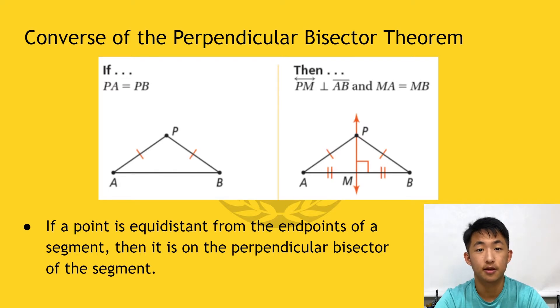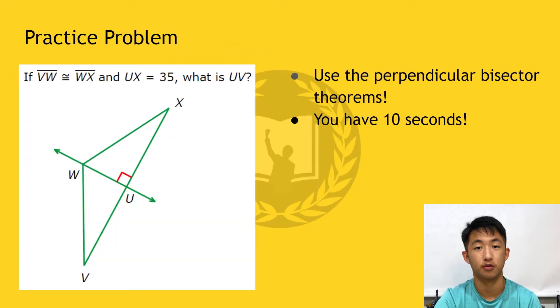Therefore, in this case, the justification is since PA is equal to PB, this means that P is on the perpendicular bisector of AB, which turns out to be PM. All right, let's move on to this practice problem.